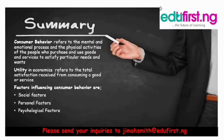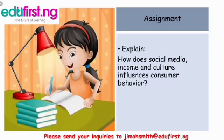In summary, what have we learned today? We are able to define consumer behavior as the mental and emotional process and the physical activity of people who purchase and use goods and services to satisfy particular needs and wants. Under the utility concept, utility in economics refers to the total satisfaction received from consuming a particular good or service. We also studied that the factors influencing consumer behavior are social factors, personal factors, and psychological factors. Before we leave, your assignment is to explain how social media, income, and culture influence consumer behavior.